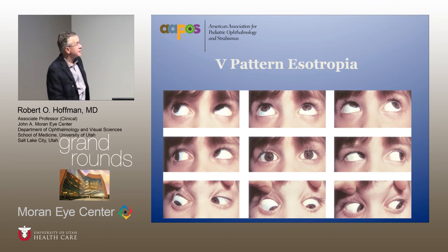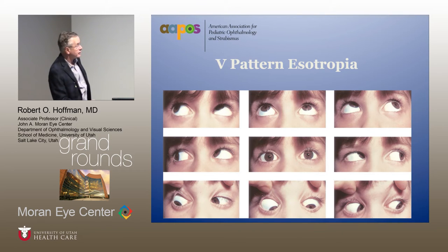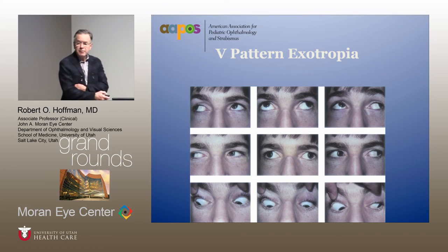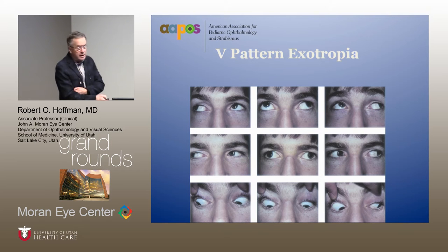This second patient also has V pattern esotropia with large angle esotropia in down gaze — there's probably about 35 or 40 prism diopters of disparity between up gaze and down gaze. You can also see V patterns with exotropia: in this patient with large angle exotropia in up gaze, he is essentially ortho in down gaze. You see this over-elevation start to show up in straight right and left gaze, much more pronounced in the oblique gazes.